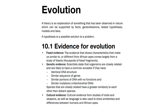Evolution is a theory. A theory is an explanation for something that has been observed in nature which can be supported by facts, generalizations, tested hypotheses, models and laws. And a hypothesis is a possible solution to a problem.